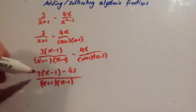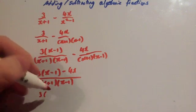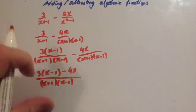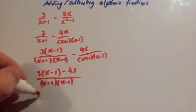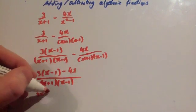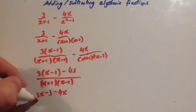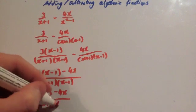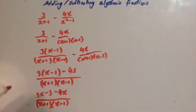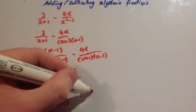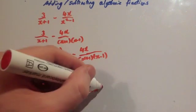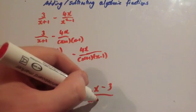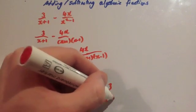Now let's multiply out the bracket. You're going to get 3x — 3 times minus 1 is minus 3 — take away 4x, all over (x plus 1)(x minus 1). So 3x take away 4x gives minus x minus 3 over (x plus 1)(x minus 1).